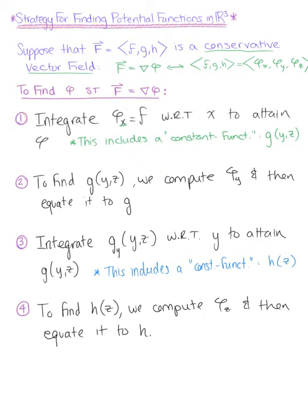By repeating this integration process, we incorporate each component of our vector field. One last note: while I started in step one using the partial derivative of phi with respect to x, you can also begin with the partial derivative with respect to y or z. I encourage you to play around with where you start, since in some cases the partial derivative with respect to y or z may be easier than x.